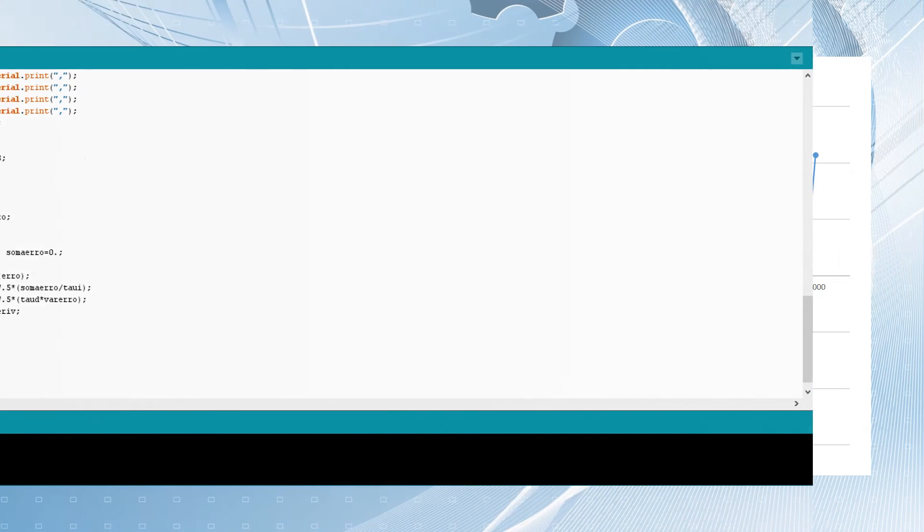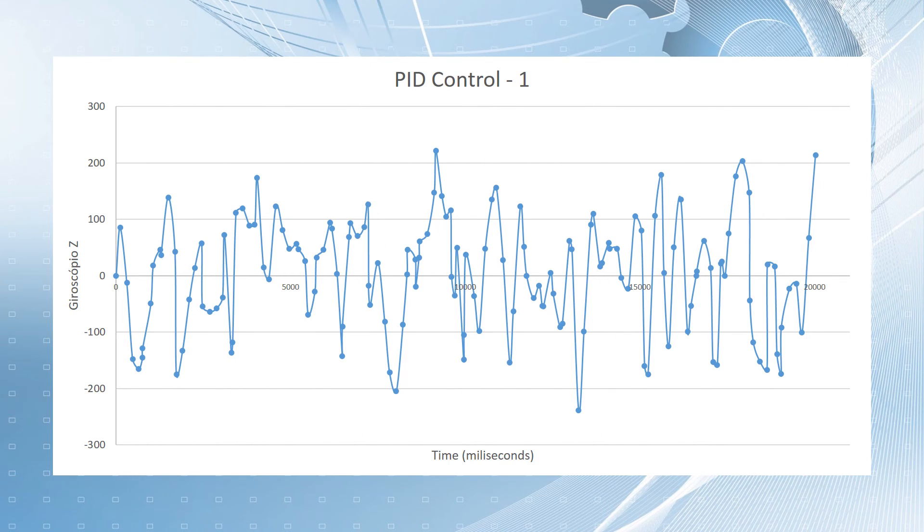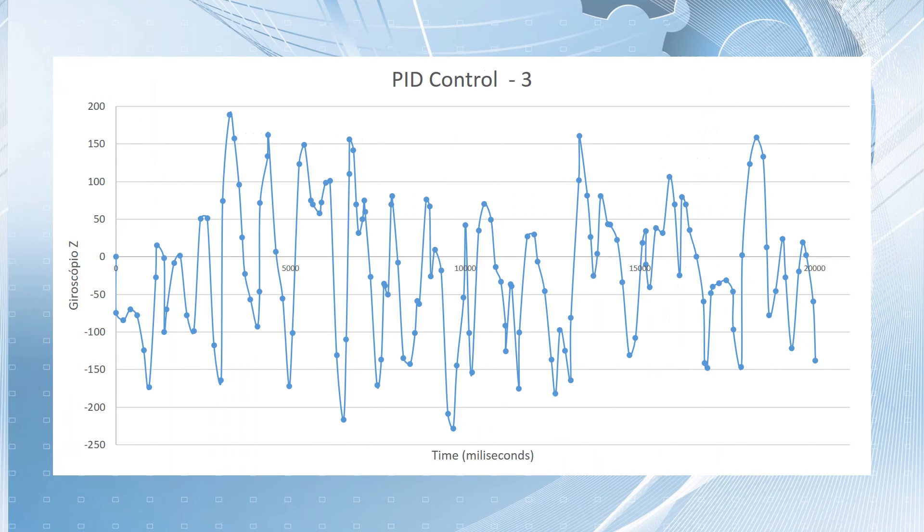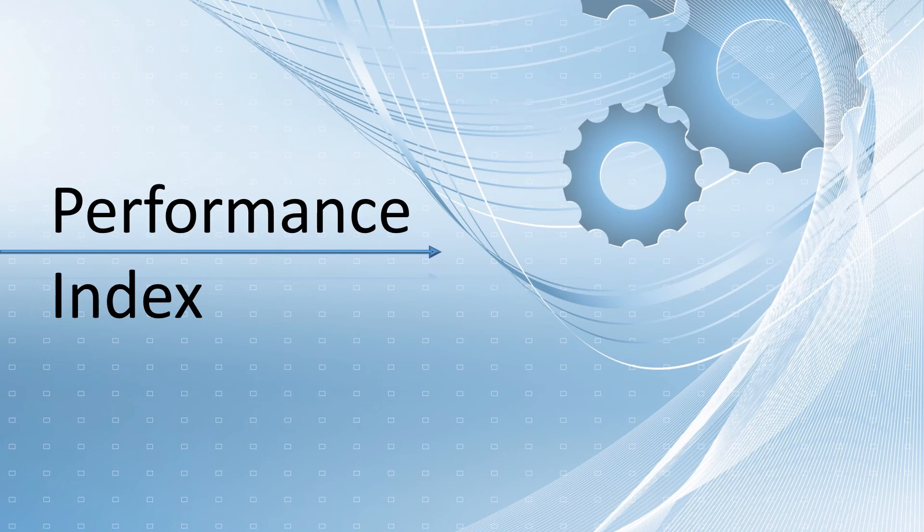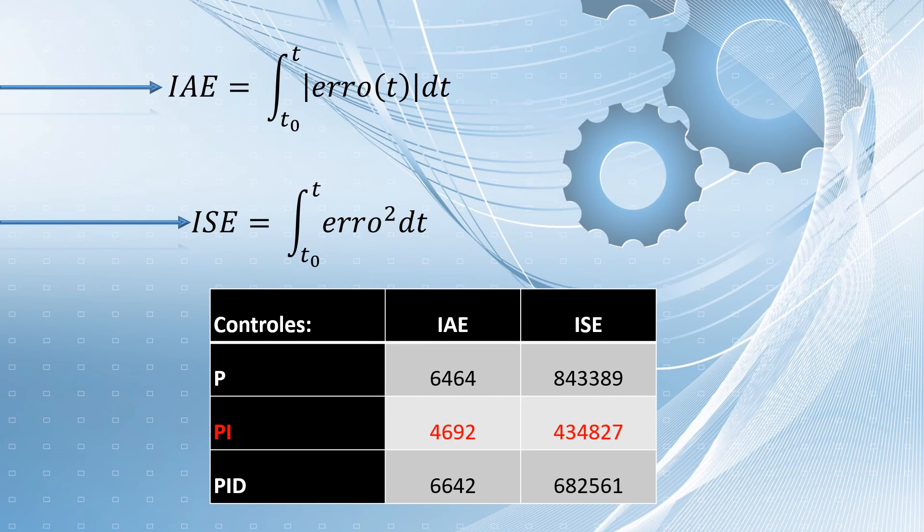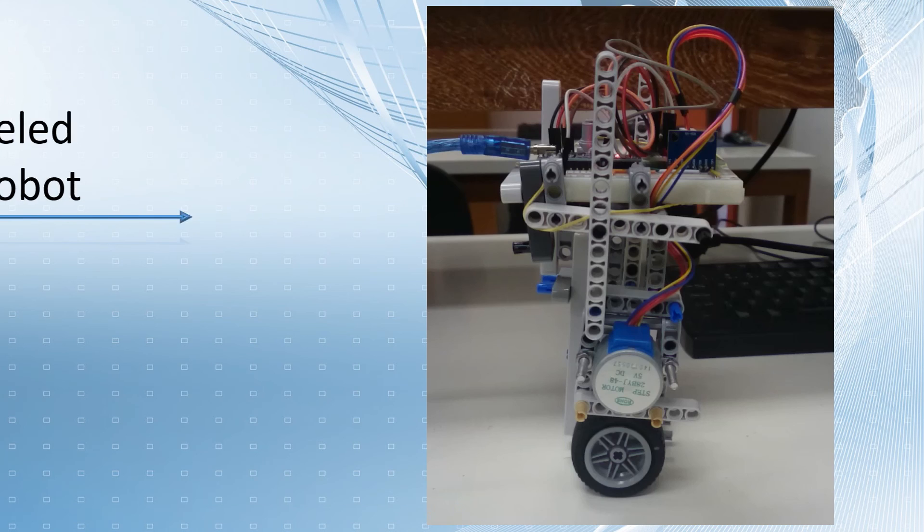Performance index. The performance indices are used to measure the error performance. There are two types of them: the IAE, the integral of absolute error, and the ISE, the integral of squared error. In this case, the PI presents the best result. This is how it works.